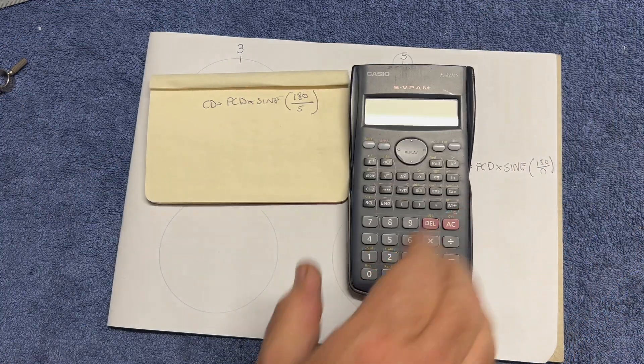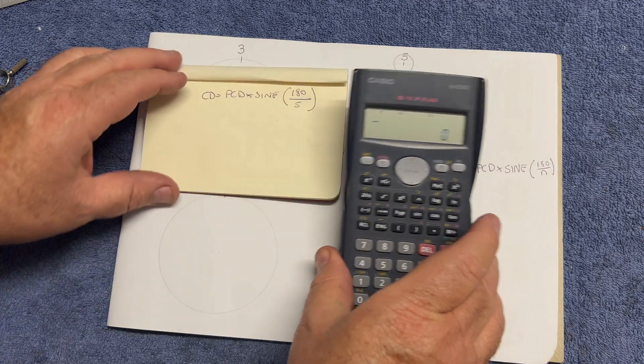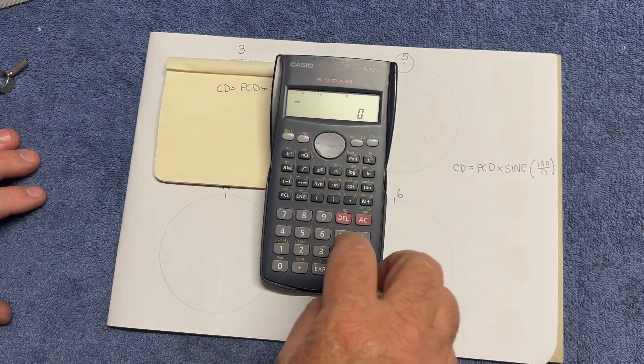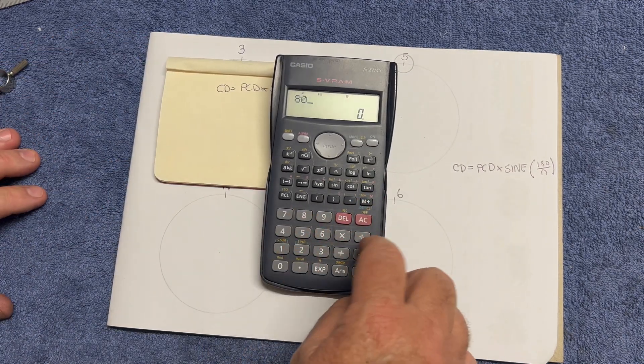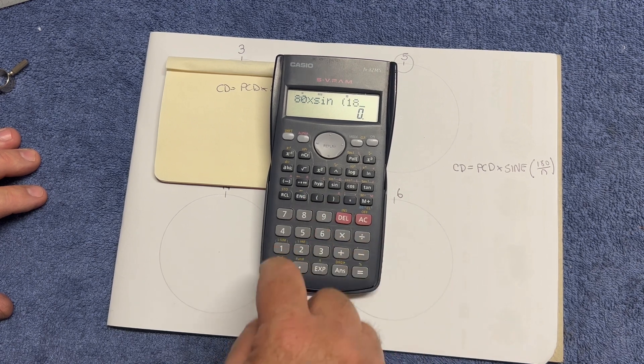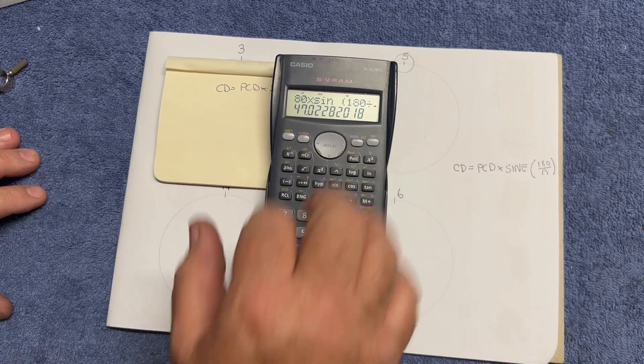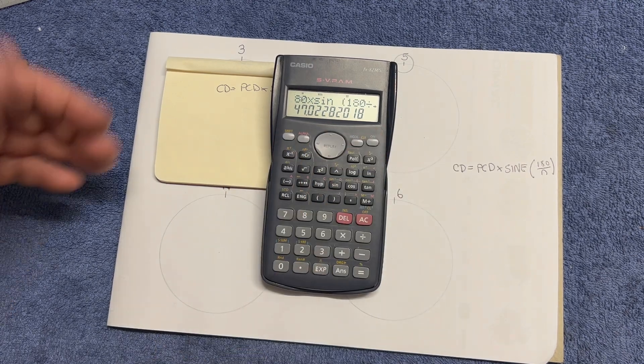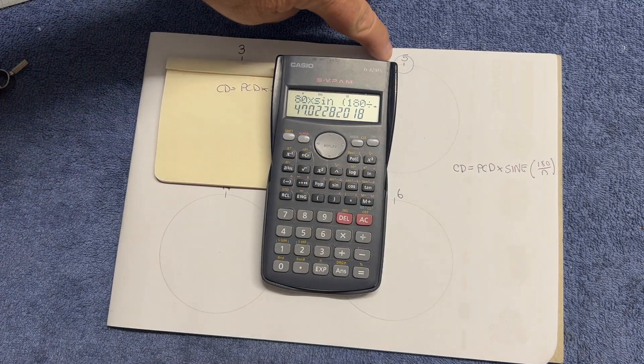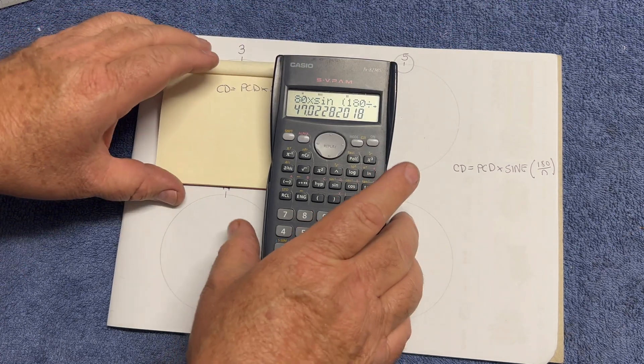So here's our formula. Chordal distance equals PCD times sine, bracket, 180 divided by the number. So the number in this exercise will be five. So we grab out our scientific calculator and turn that on. I might elevate this for you. So our PCD was 80 multiplied by sine, open bracket, 180 divided by five, close bracket, hit equals. And it's telling us that our chordal distance for this one for five circles around the PCD would be 47 millimeters.